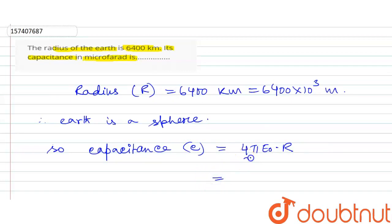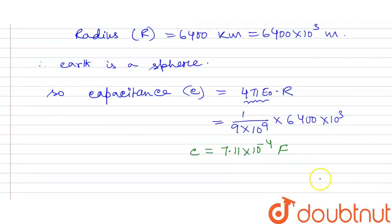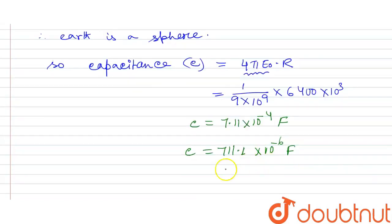So 4 pi epsilon 0 has a total term value of 1 by 9 into 10 to the power 9. Therefore C equals (1 / 9×10⁹) into 6400 into 10 to the power 3. Using the calculator, C equals 711.1 microfarad.